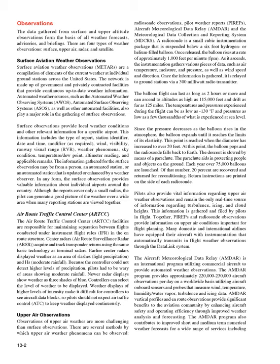Surface Aviation Weather Observations are a compilation of elements of the current weather at individual ground stations across the United States. The network is made up of government and privately contracted facilities that provide continuous up-to-date weather information. Automated weather sources, such as the Automated Weather Observing Systems (AWOS), Automated Surface Observing Systems (ASOS), as well as other automated facilities, also play a major role in the gathering of surface observations.